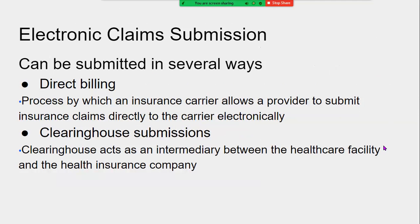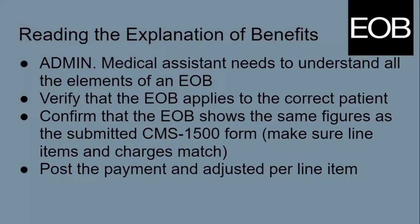Electronic claim submission can be done in several ways: direct billing with a paper copy, or electronically. Most commonly, we send it to a clearinghouse, which acts as an intermediary between the healthcare facility and the insurance company. For example, if a claim was submitted but missing insurance information, the clearinghouse would catch that and send it back to us. Think of it like a sifter — it catches big mistakes, though it doesn't catch everything.